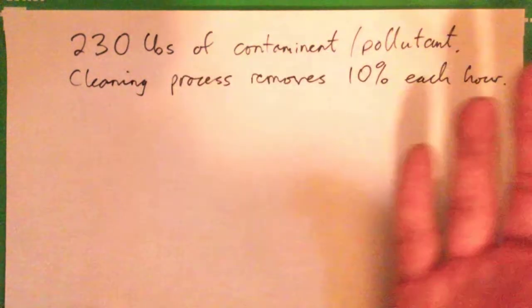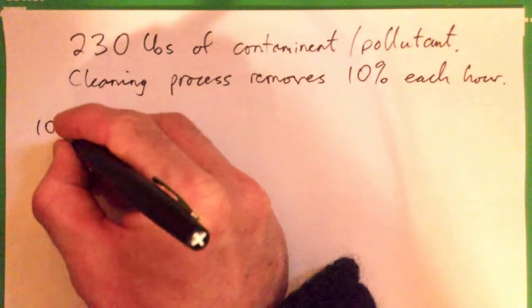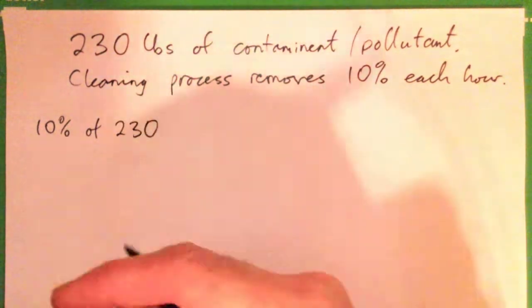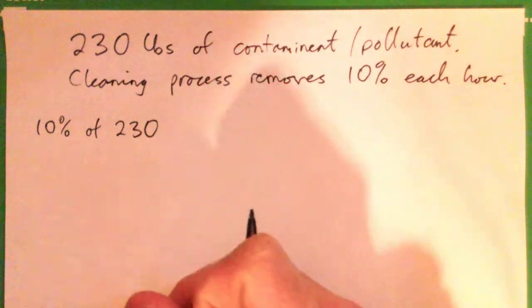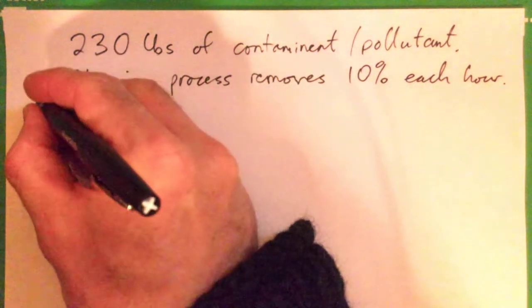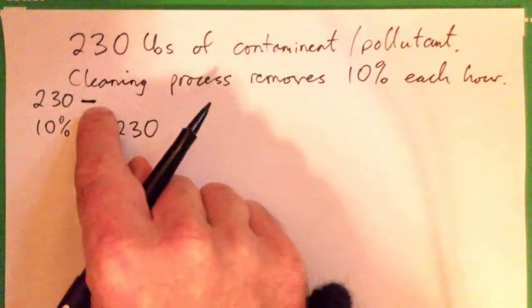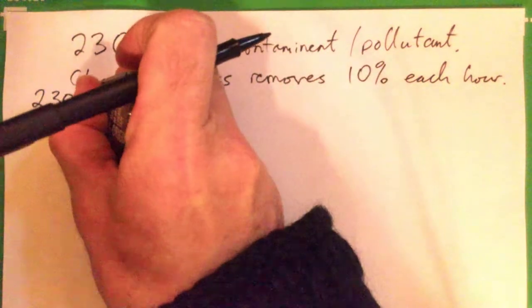To figure out the first hour, there's kind of two ways of doing it. I like you to do both ways just so you understand. The first way is to get 10% of 230 and then subtract that from 230. We're going to take 230 and subtract 10% of that. So just go ahead and do that.